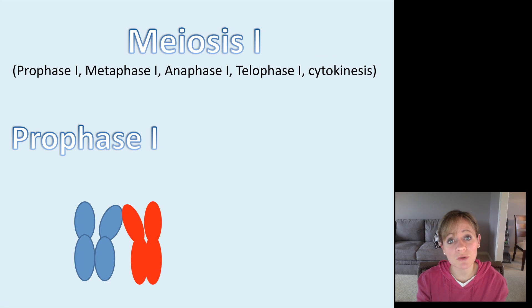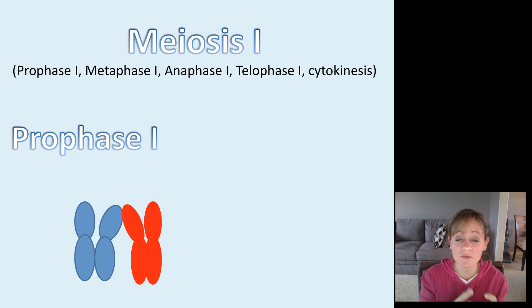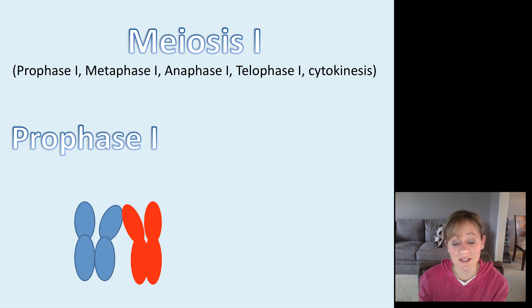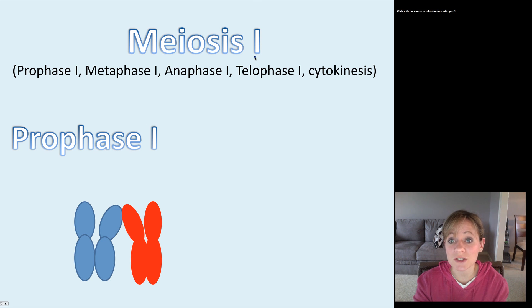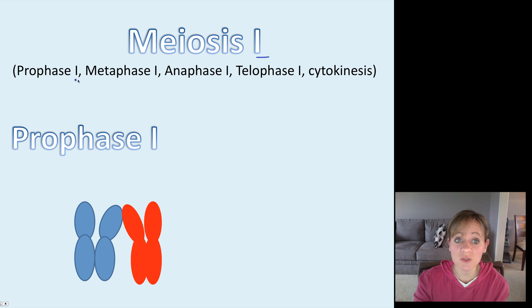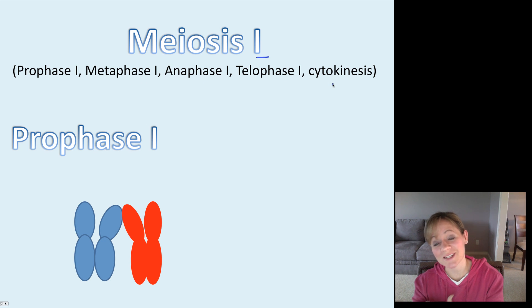Now I'm going to take you through all the steps of meiosis. They're very similar to mitosis, but meiosis actually has two phases. First we're going to look at meiosis I, which consists of prophase I, metaphase I, anaphase I, telophase I, and cytokinesis. Then we'll look at meiosis II.